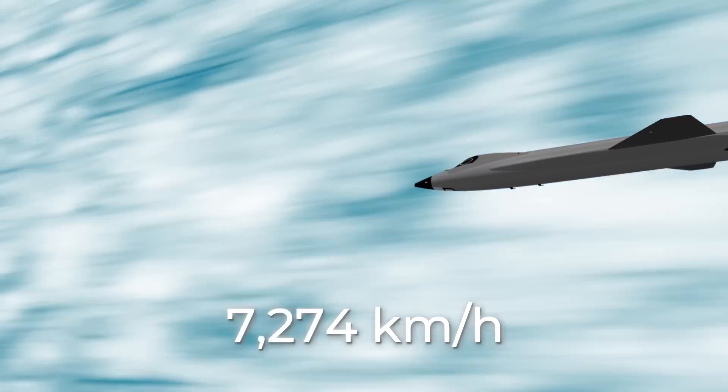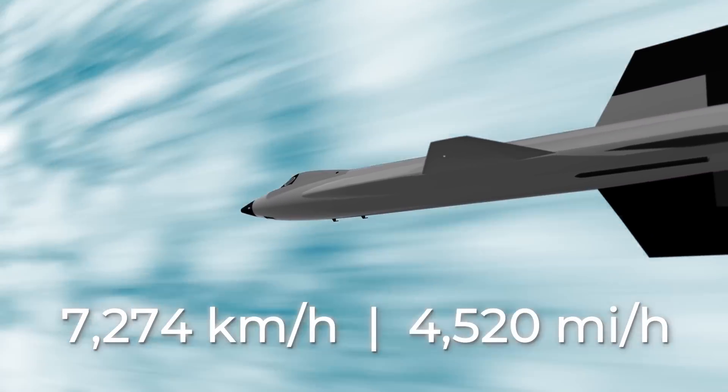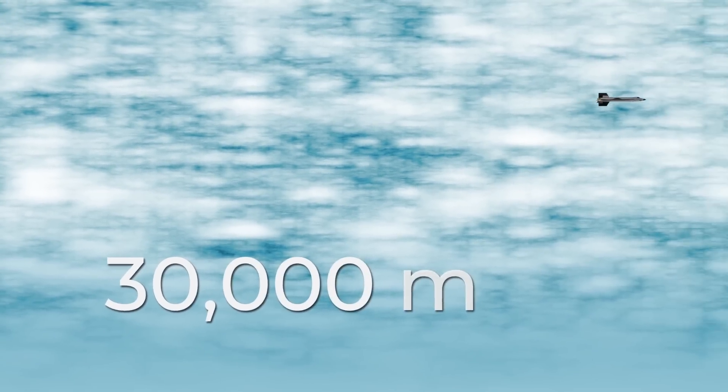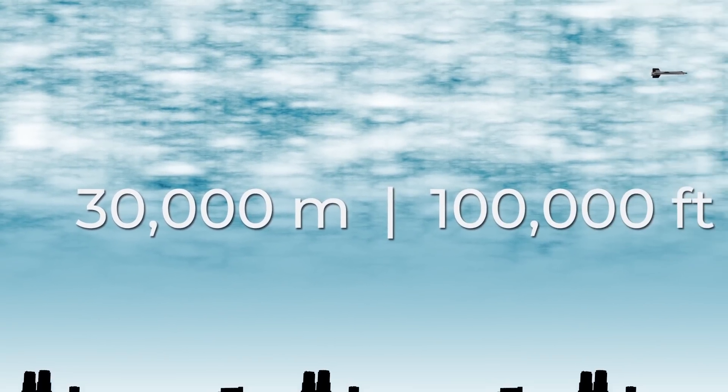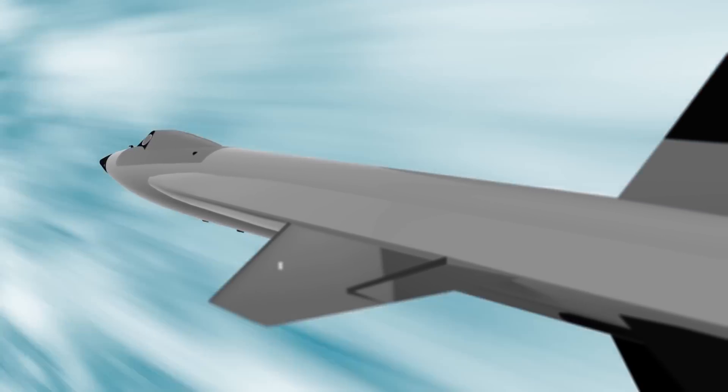The official X-15 world record for maximum speed among manned aircraft was registered in October 1967. 7,274 km per hour. That's 4,520 miles per hour. And that at an altitude of about 30,000 meters, or 100,000 feet. And all of this for the study of flight at hypersonic speeds.